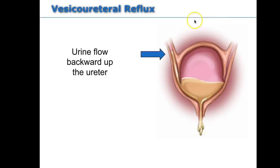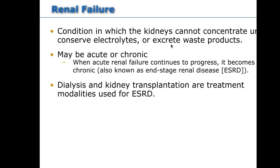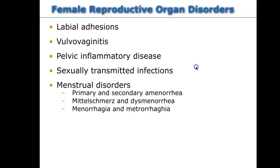Renal failure in kids is much like in adults — kidneys can't concentrate urine, electrolytes are disrupted, you retain potassium and fluids, and waste products can't be eliminated. It can be acute or chronic. Acute resolves, but if it doesn't, it develops into chronic or end-stage renal disease. End-stage renal disease results in either peritoneal dialysis, hemodialysis, or a kidney transplant.